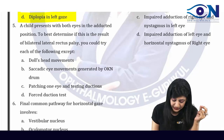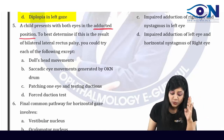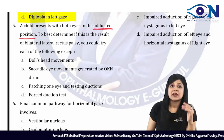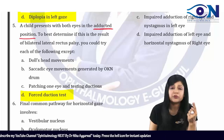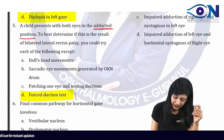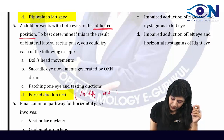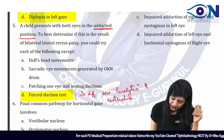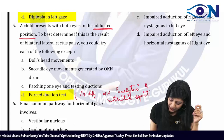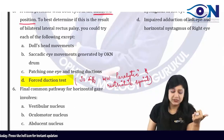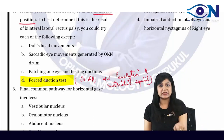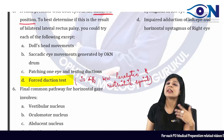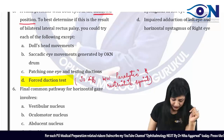Next question: a child is presenting with both eyes in the adducted position. Now to best determine if this is the result of bilateral rectus palsy, you could try each of the following except — the answer is D, because the forced duction test is actually used to differentiate between the paralytic and the restrictive squint. You can use the doll's eye movements, saccadic eye movements using the optokinetic nystagmus drum, or patching of one eye, but the forced duction test will not help here.